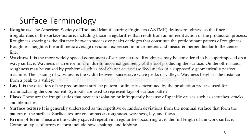Generally, roughness is caused because of the machining. If your machining is not proper, or if you are going for casting or some forging processes, then definitely the material you are getting will have roughness. According to the definition, ASTME — American Society of Tool and Manufacturing Engineers — defines roughness as the finer irregularities in the surface texture, including those irregularities that result from an inherent action of the production process.